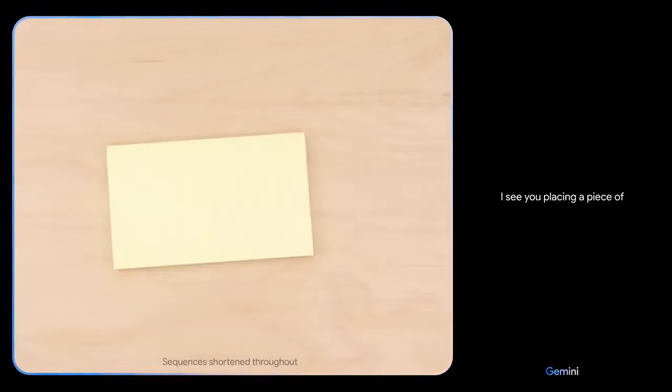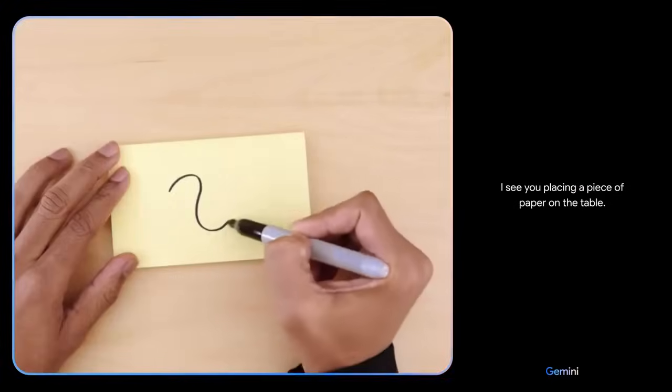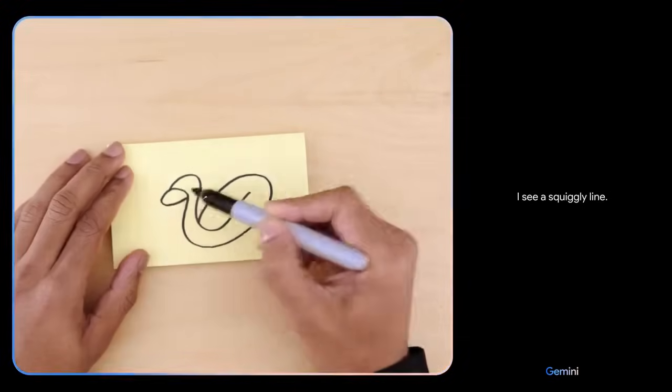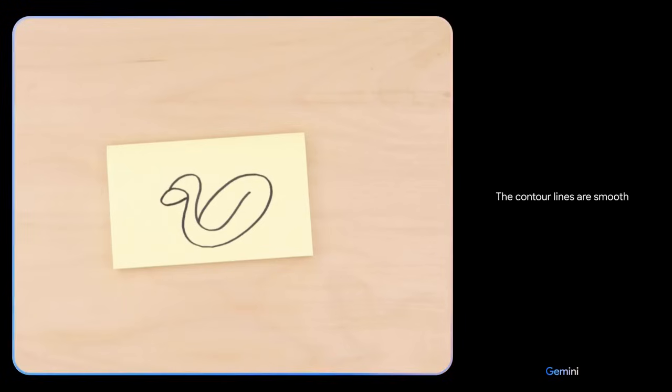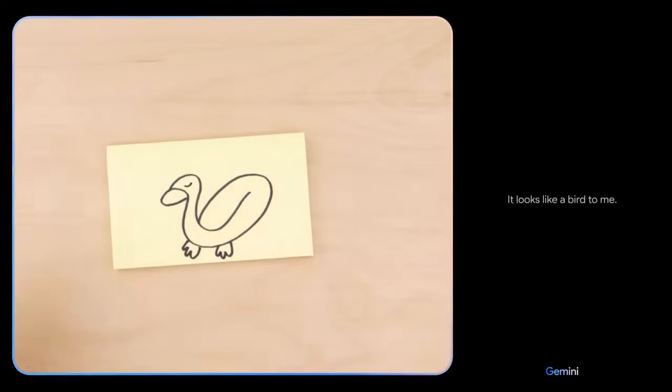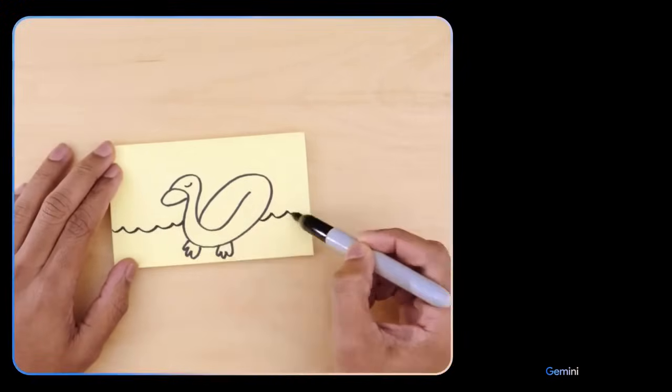Alright, testing Gemini. Here we go. Tell me what you see. I see you placing a piece of paper on the table. I see a squiggly line. What about now? The contour lines are smooth and flowing with no sharp angles or jagged edges. It looks like a bird to me.